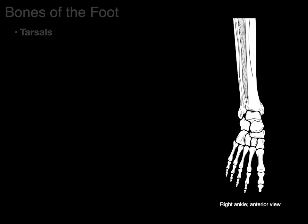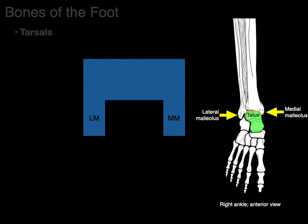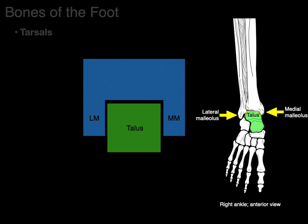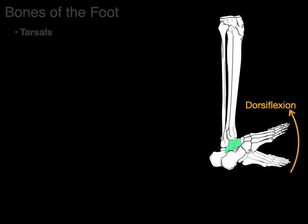Let's look at the right ankle in this anterior view — there's the talus. See how it has bones on the side, like the lateral malleolus of the fibula and the medial malleolus of the tibia. Between those, it forms a joint. Here we have the lateral malleolus and medial malleolus with the talus in between. This joint is called the tibiotalar joint, and it's a mortise joint that allows for dorsiflexion and plantarflexion motions.